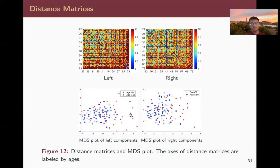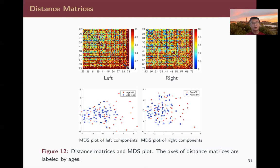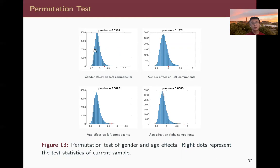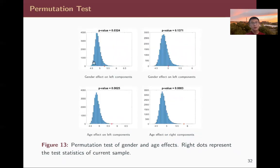We also perform a formal distance-based permutation test to verify gender and age effects. For the gender test we randomly assign subjects to male and female; for the age test we assign young (under 50) and old labels. We calculate the test statistic, repeat this procedure many times to get a null distribution, and compare the true-label test statistic shown as a red dot. We don't observe a strong gender effect, but the aging effect is very strong with a highly significant p-value.